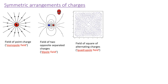We can get more complicated fields. This is a field of a square of alternating positive and negative charges — a negative charge here, a positive charge here, a negative here, and a positive here. You can see the 90-degree fourfold symmetry of the pattern. This is called a quadrupole field.